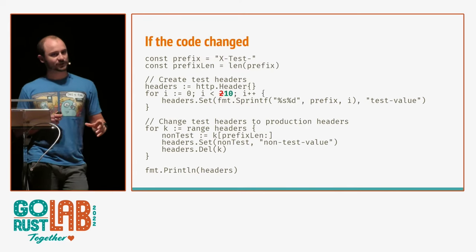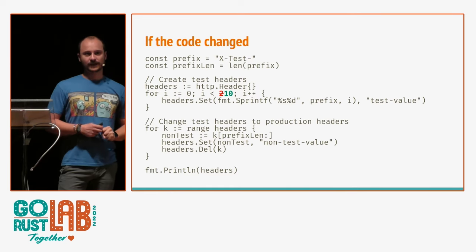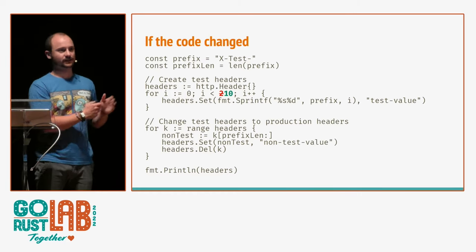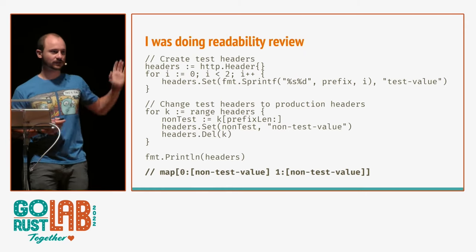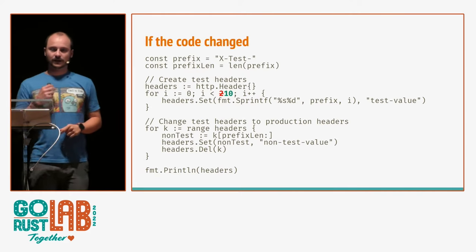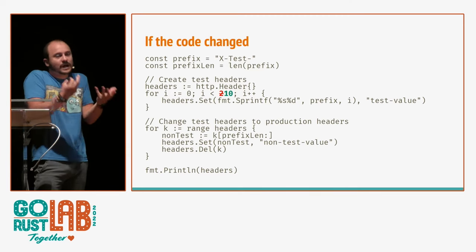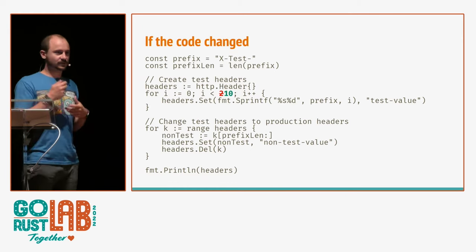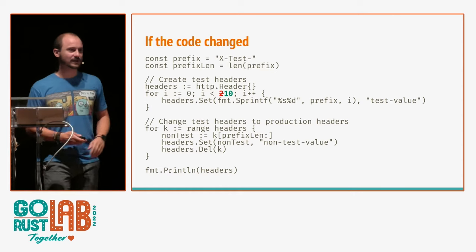But then I said, what happens if instead of having two headers, you now have ten? I would like you to picture in your mind what would happen. Previous code, two headers, prints the two headers — non-test value, zero, and one. New code does the very same thing but ten times. Someone in their right mind would expect this code to print ten headers. Well, this code panics.